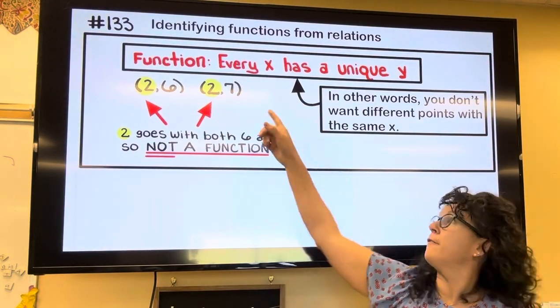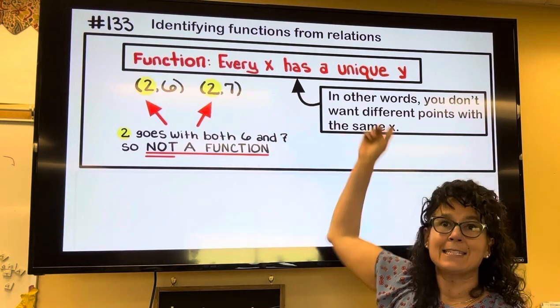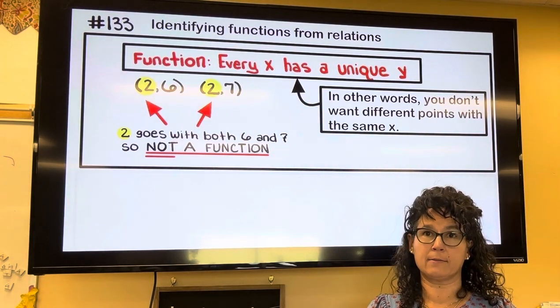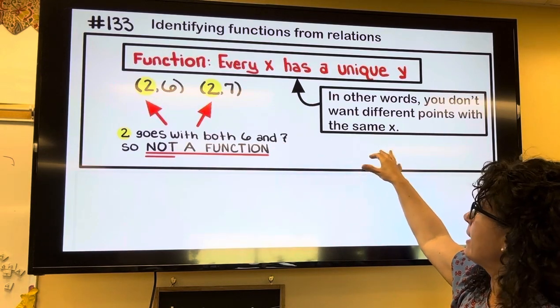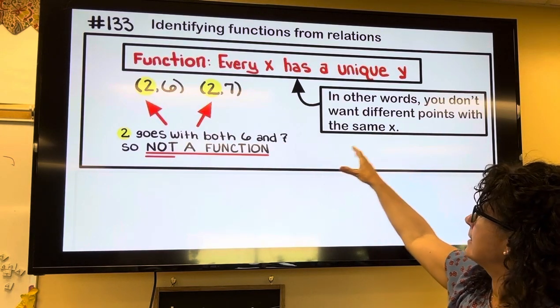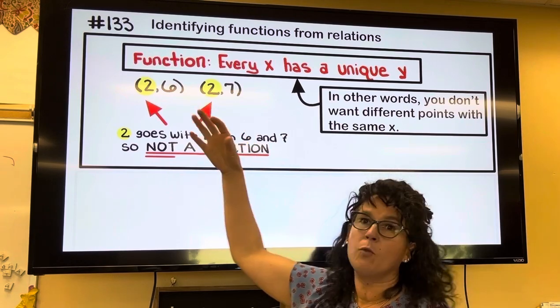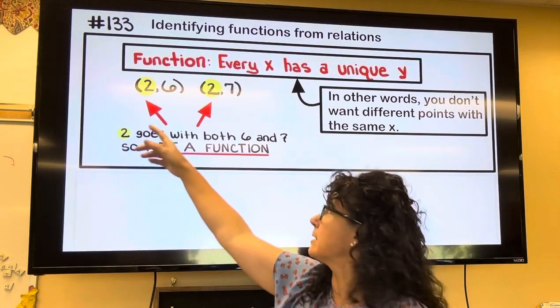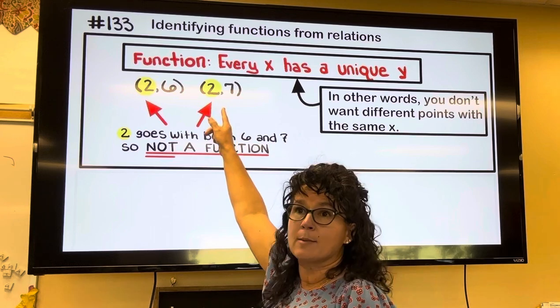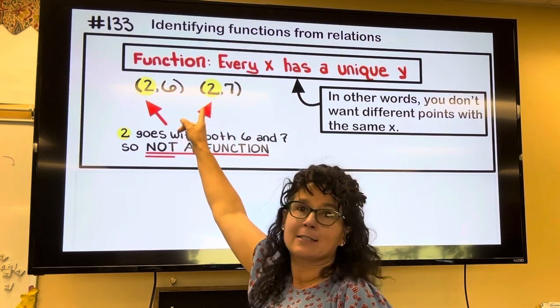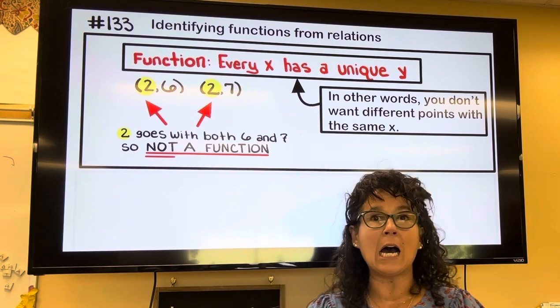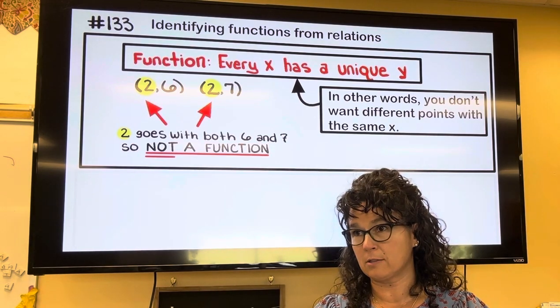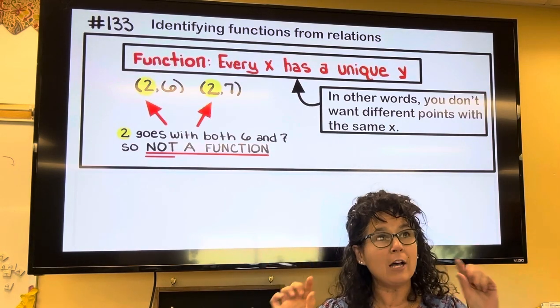So our basic definition of a function is every x has to have a unique y. Another way to say that is we can only have one x that's the same. See how this point is 2 comma 6 and that's 2 comma 7? They have a couple of x's that are exactly the same, so this one is not a function.